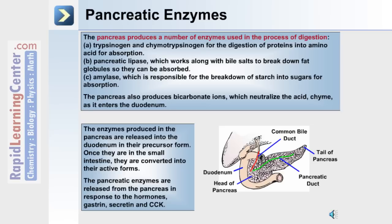The enzymes produced by the pancreas are released in a precursor form. Once they're in the small intestine, they're converted into their active forms. The pancreatic enzymes are released from the pancreas in response to hormones such as gastrin, secretin, and CCK.